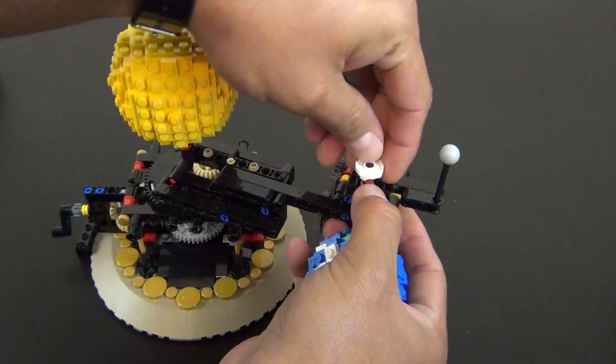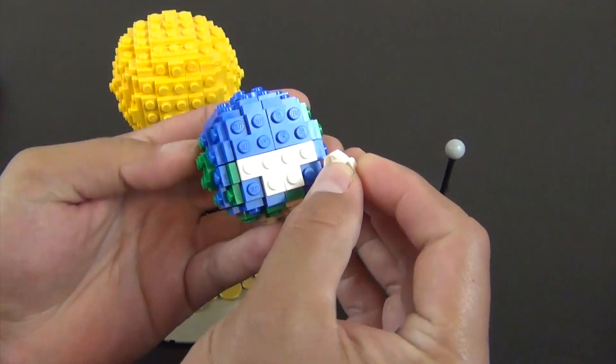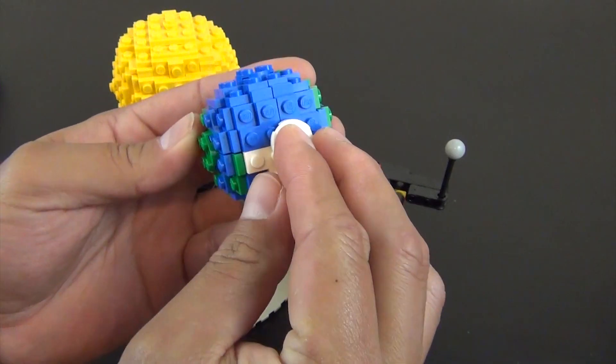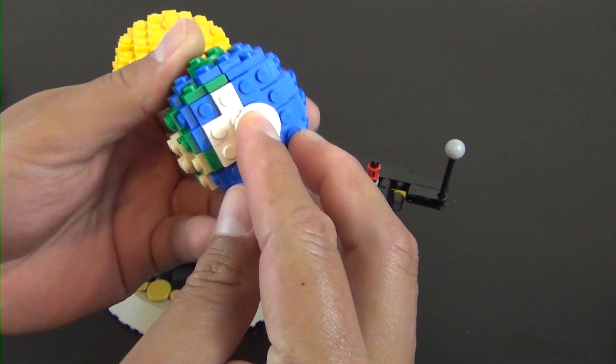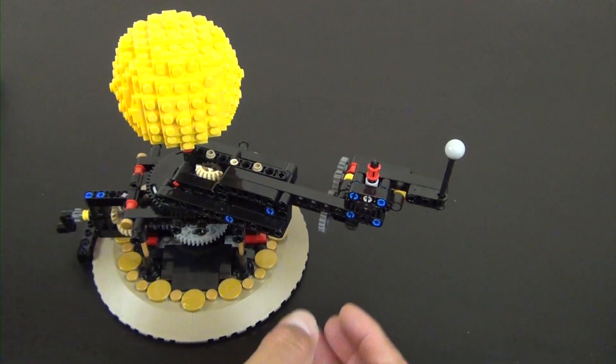And it's just held on with this little Technic plate that has - or it's a 2x2 round plate that has a little Technic axle hole in it. So pop that off and we're gonna move that to the side.